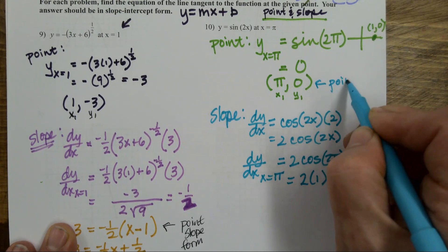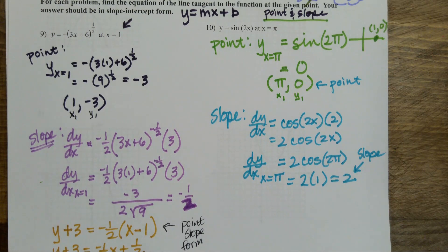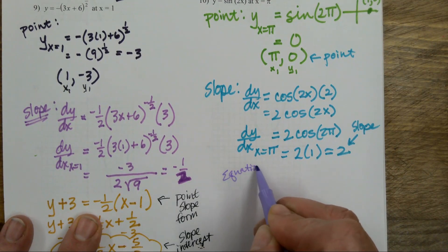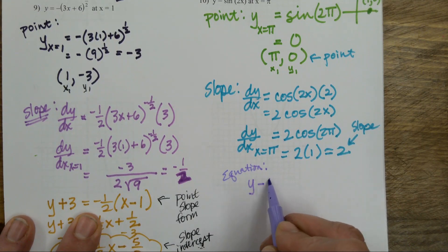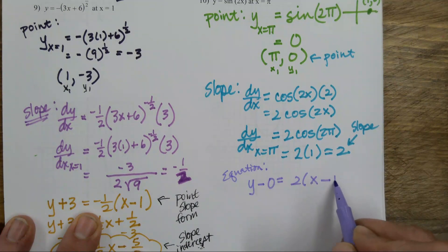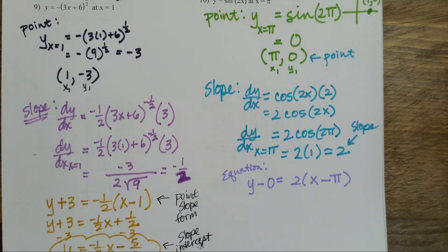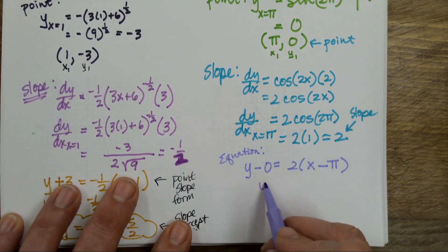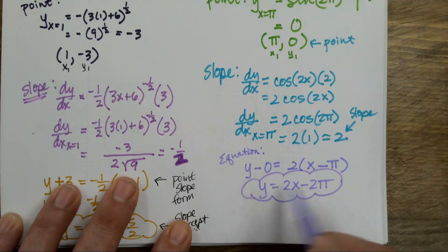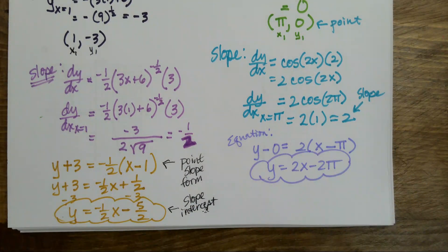There's my point, there's my slope. I'll put these in point-slope first. Y minus y1 equals slope times x minus x1 — and that simplifies to y equals 2x minus 2 pi. What does that mean? This line crosses the y-axis at roughly negative 6.28, because that's what 2 pi is. It doesn't cross at a solid integer point, but neither did the previous one.